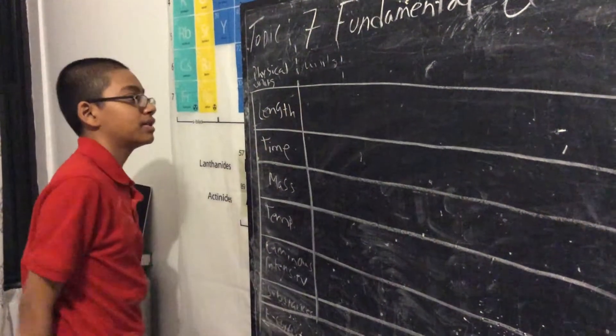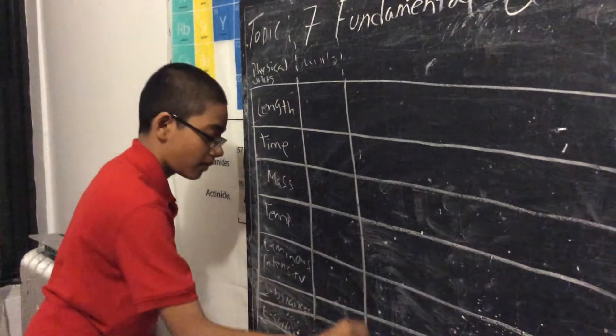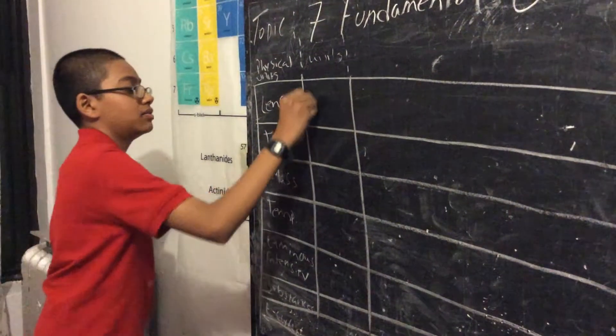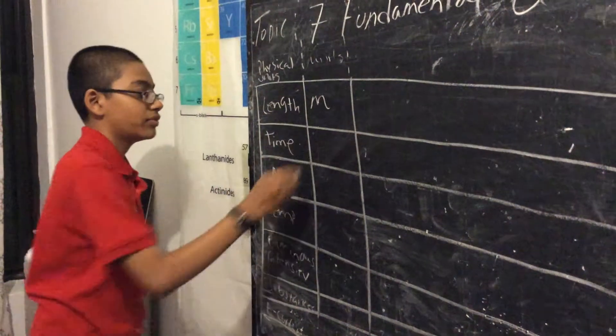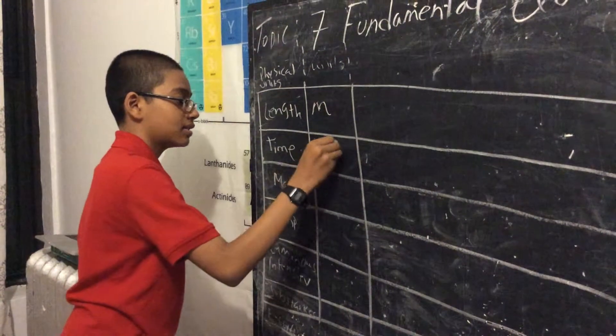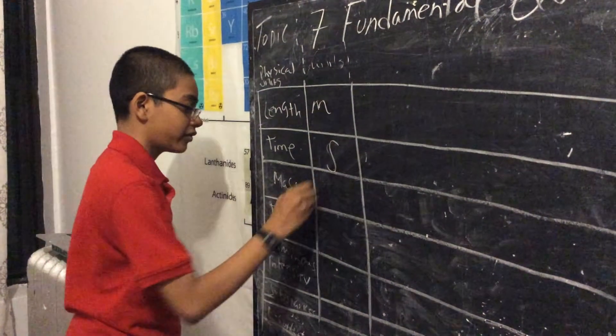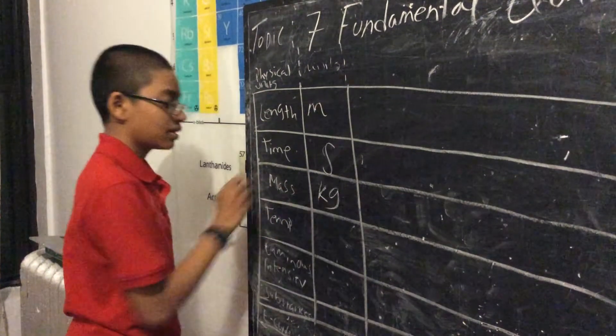So let's start off writing the units. For length we measure in meters, for time we measure in seconds, for mass we measure in kilograms.